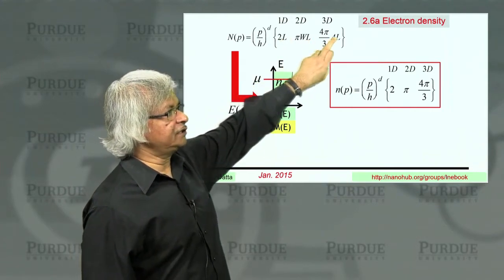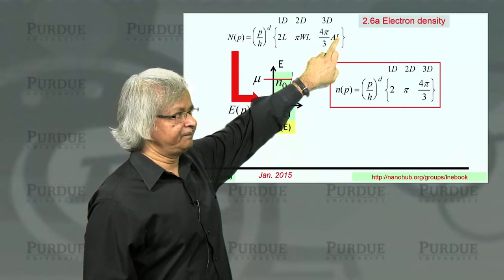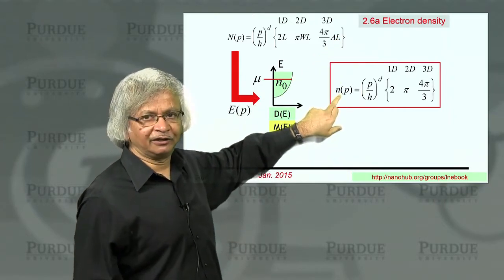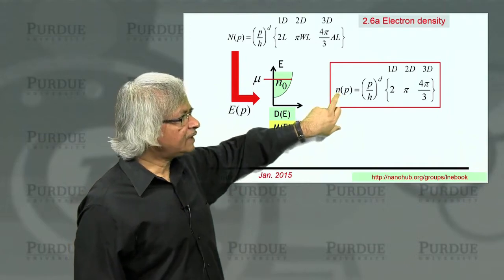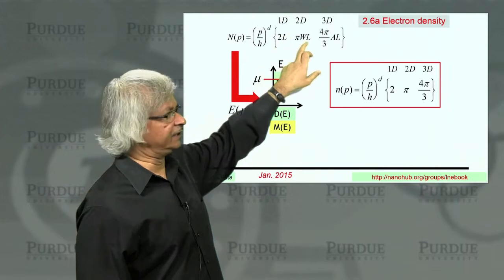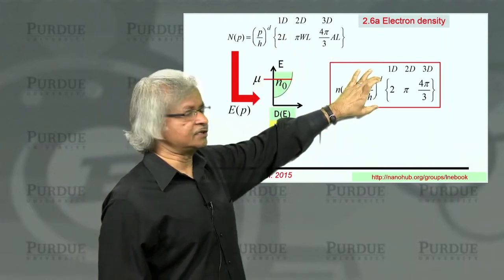So what we could do is take that capital N and divide by L in 1D, divide by WL in 2D, or divide by AL in 3D. And so you would have this function, which you could call electron density, small n. And it's exactly that function, except that I have left out the L and the WL and the AL.